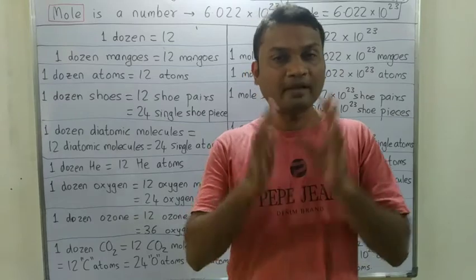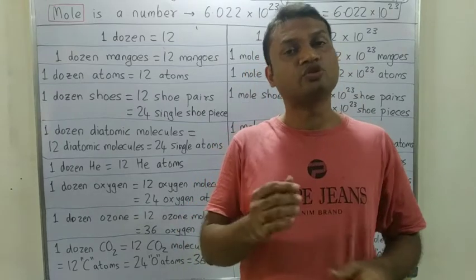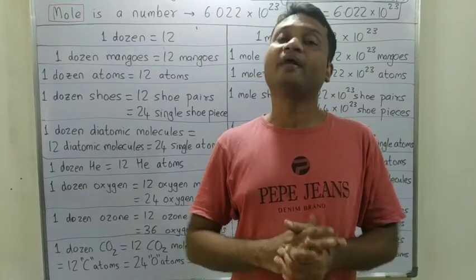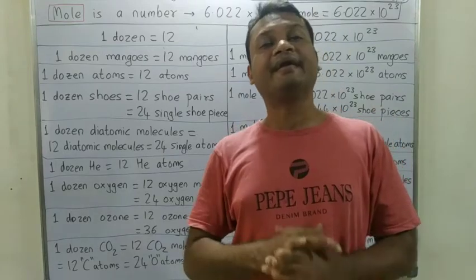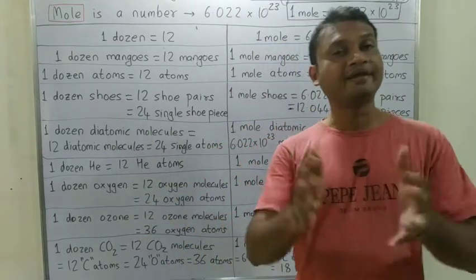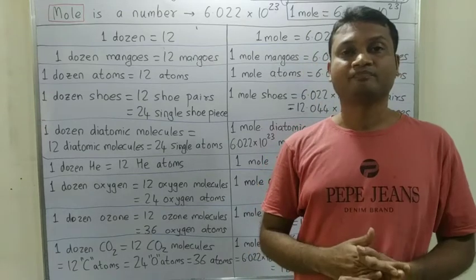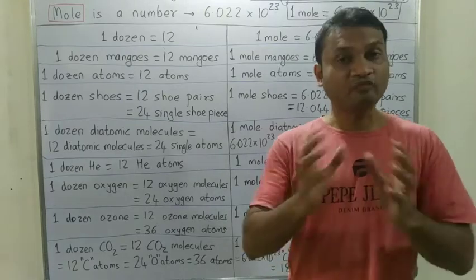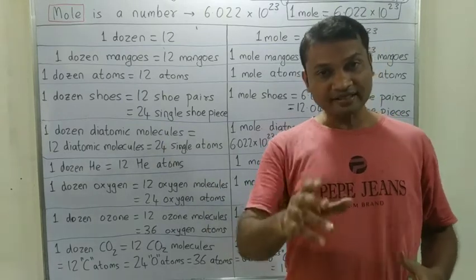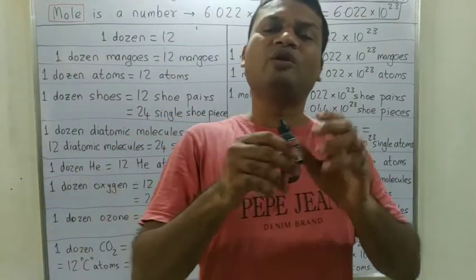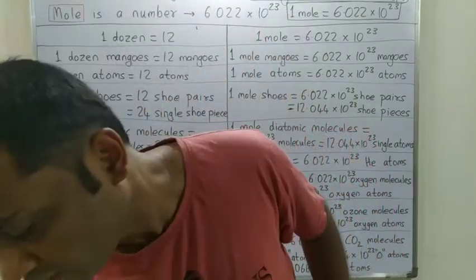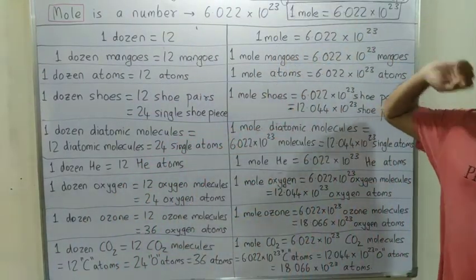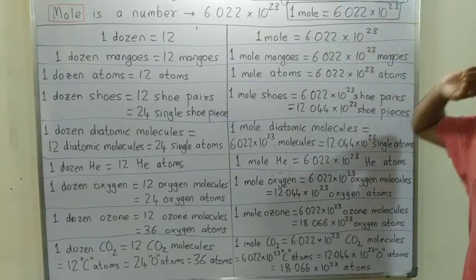For example, 1 dozen aloo, 1 dozen tomatoes, 1 dozen aam — that works fine. But if we need to count rice grains or mustard seeds, we need a bigger number. So when we talk about gas molecules, gas molecules are almost uncountable. So much a big number that we need 6.022 into 10 raise to 23 — a very big number mostly used to calculate the number of gaseous atoms and gaseous molecules.